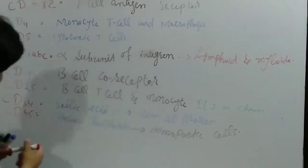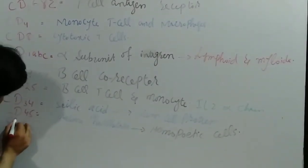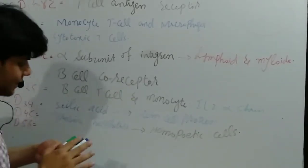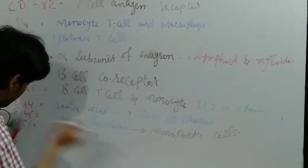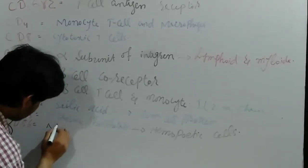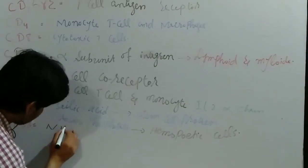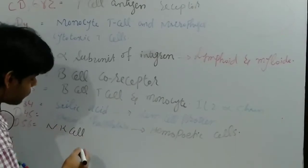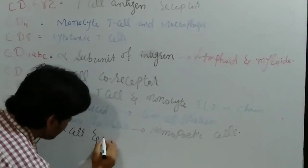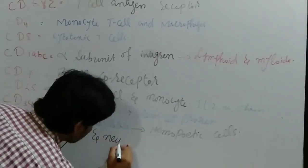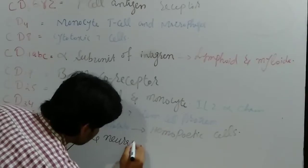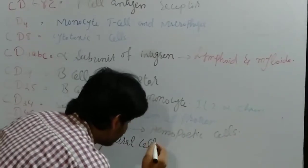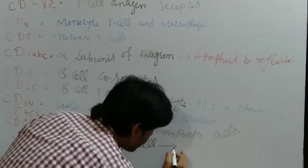Then we have CD56. CD56 is usually present on natural killer cells and neuronal cells. CD56 is specially used for adhesion.